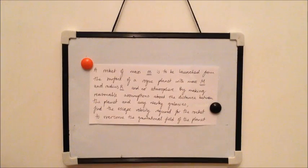The second question which I'm going to go through goes as follows. A rocket of mass m is to be launched from the surface of a rogue planet with mass capital M and radius capital R and no atmosphere. By making reasonable assumptions about the distance between the planet and any nearby galaxies, find the escape velocity required for the rocket to overcome the gravitational field of the planet.